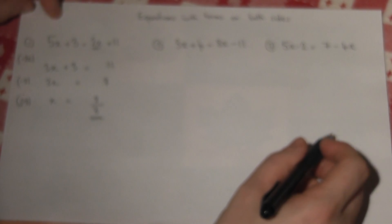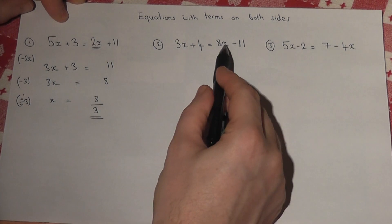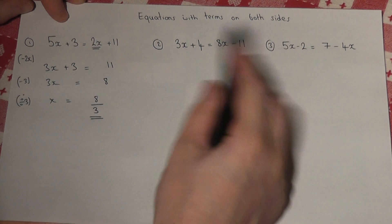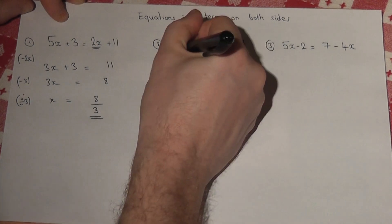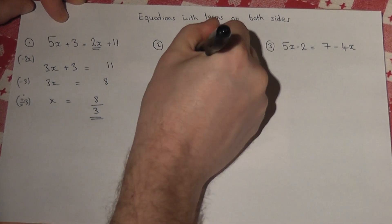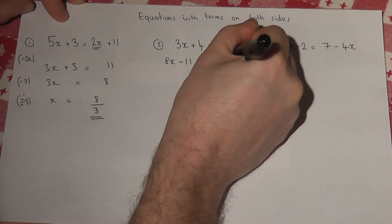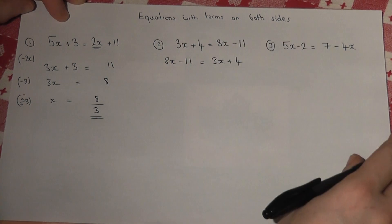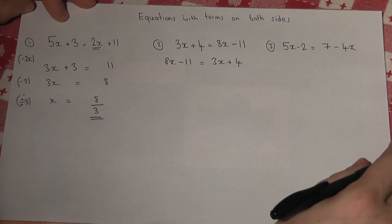Now sometimes you find that there are more x's on the right hand side than the left hand side. And one simple method here is to rewrite the equation, swapping the two sides around, and then solve it in the same way.